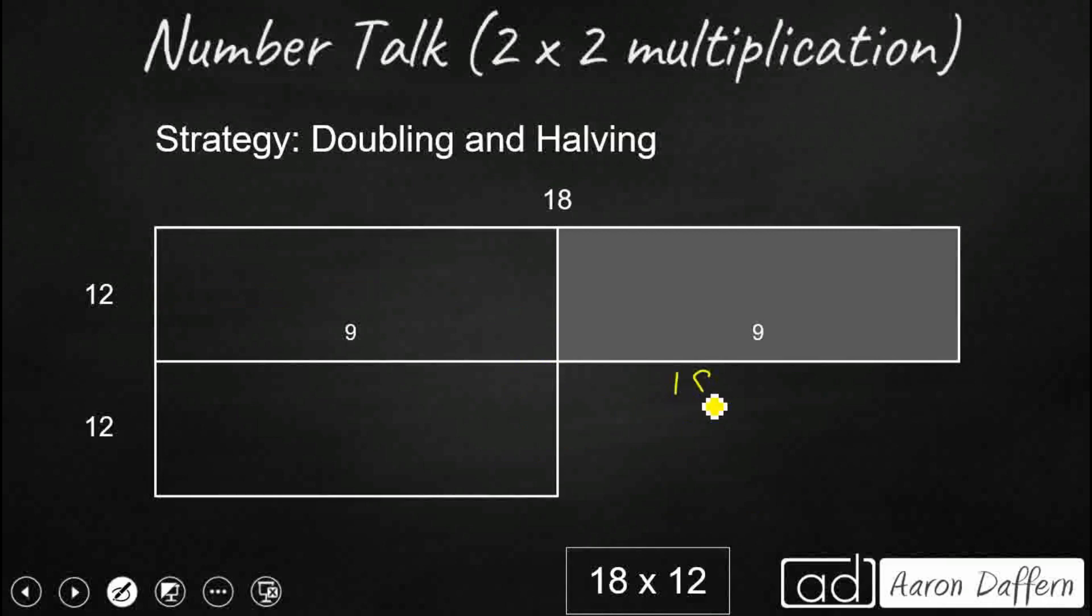Now, doubling and halving is a great strategy. As long as one of your factors is even, you can do it. So let's take our 18 and let's cut it in half. Let's say it's 9. So that's why we've got this gray box right here. We're going to get rid of half of our 18.